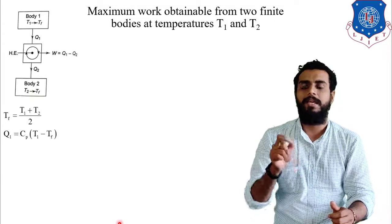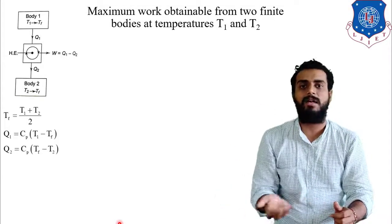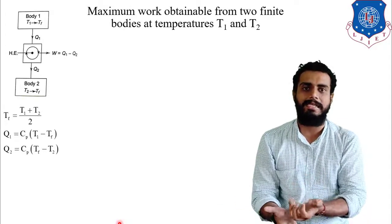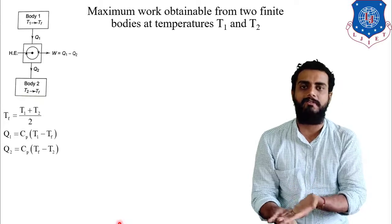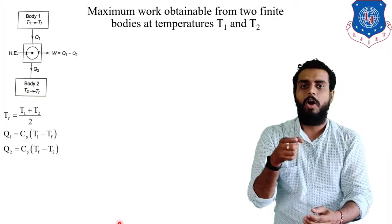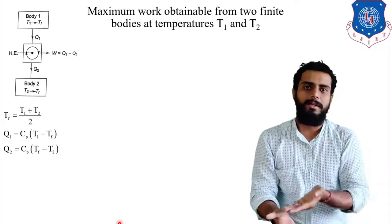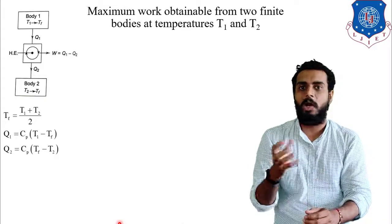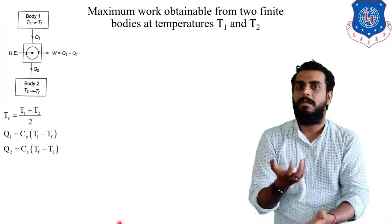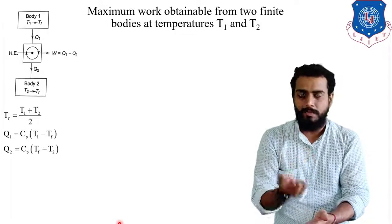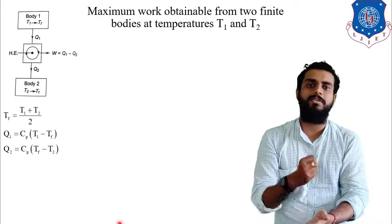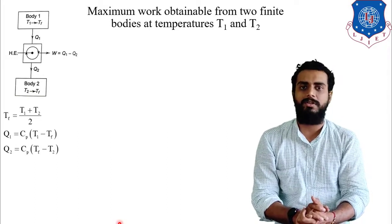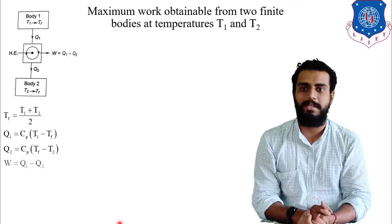Similarly, Q2 equals Cp(Tf minus T2), because the low-temperature body gains heat until its temperature rises to Tf. The net work term equals the difference between these two heat transfers: W equals Q1 minus Q2.